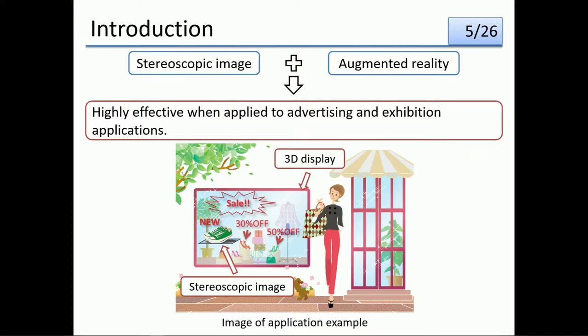This figure shows an image of an application example. For example, an application that replaces the glass of a store window with a 3D display. Therefore, stereoscopic images and additional information can be displayed to attract attention. In this study, we aim to make effective use of window areas such as store windows and exhibition booths.